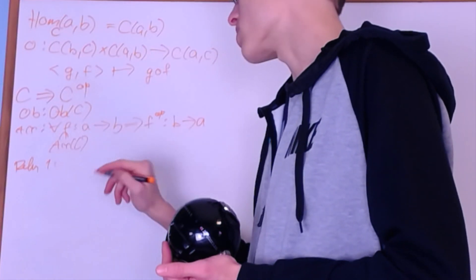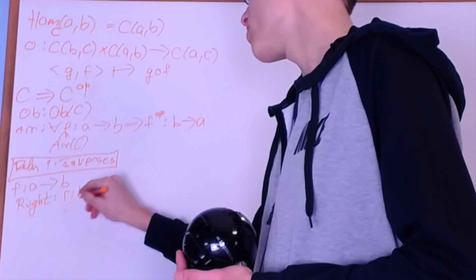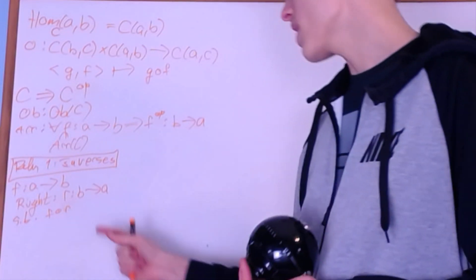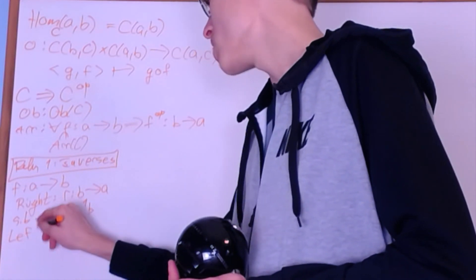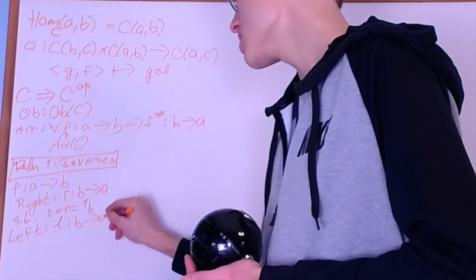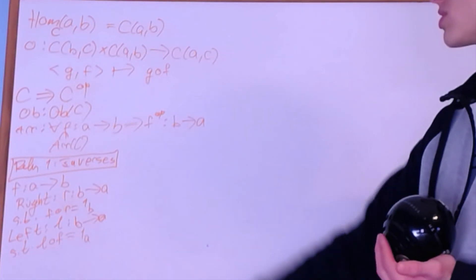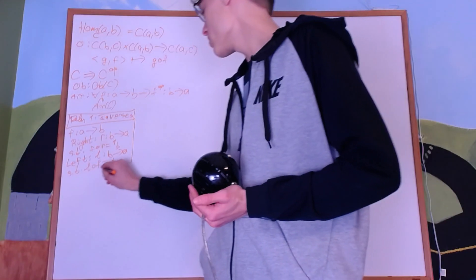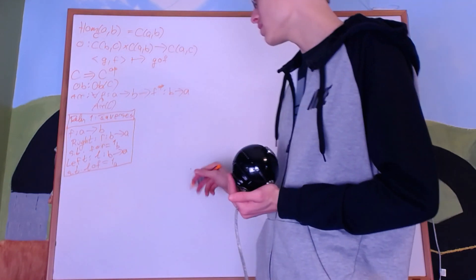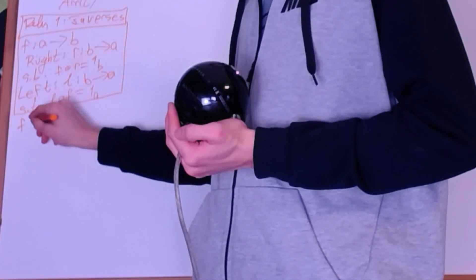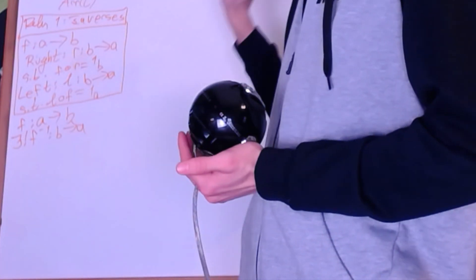Now let me introduce inverses. If I have an arrow F from A to B, a right inverse is an arrow R from B to A such that F composed R equals the identity on B. A left inverse is a morphism L from B to A such that L composed F equals the identity on A. So right inverses compose on the right, left inverses on the left. We can define an invertible arrow: F from A to B is invertible if there exists a unique arrow F-inverse from B to A that is both a left and a right inverse.